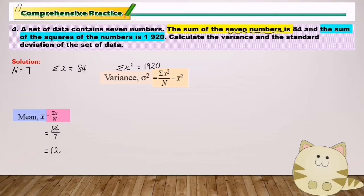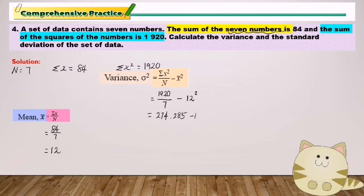The formula of variance equals sigma x squared over n minus mean squared. So sigma x squared is 1920, n equals 7, and mean equals 12. We fill in: 1920 over 7 minus square of mean equals 274.285 minus 144. Variance equals 130.29.